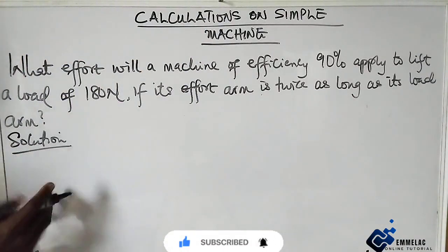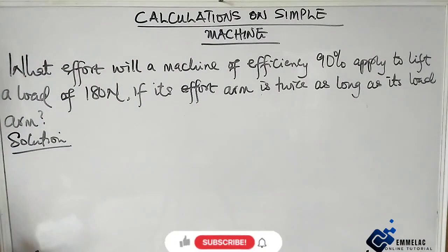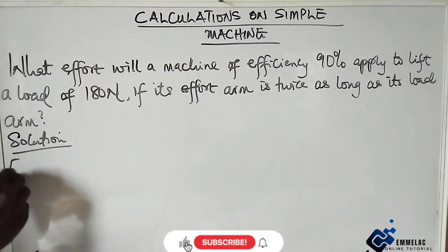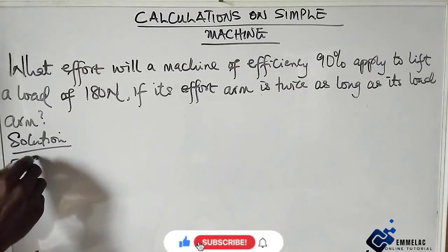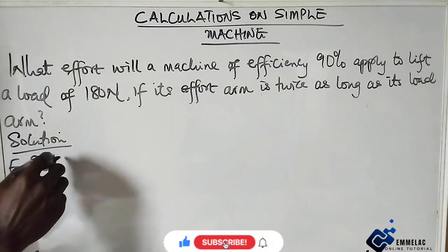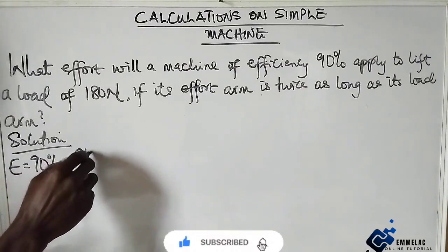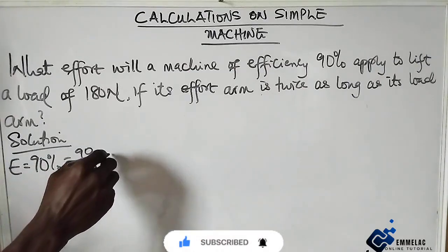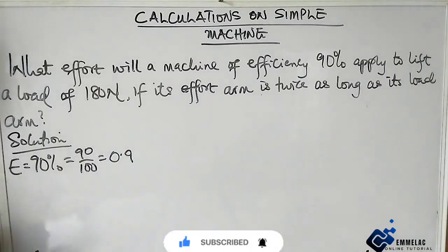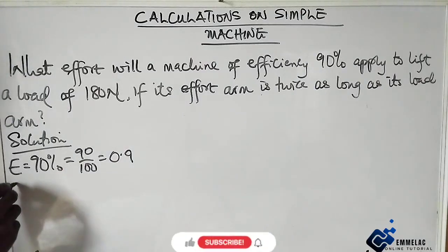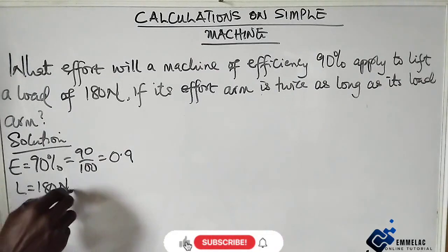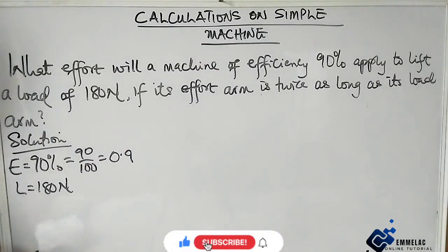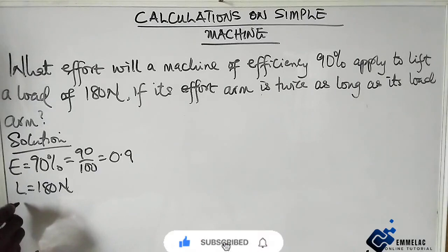First of all, writing out all the parameters. The efficiency here, E, is giving us 90%, which can be written as 90 over 100 equals 0.9. Now we have the load to be 180 newtons. The efficiency is what we're looking for—I mean, sorry, the effort is what we're looking for.